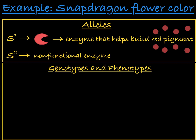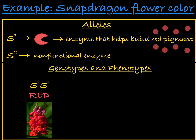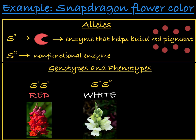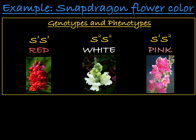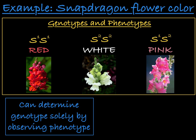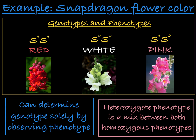When a snapdragon plant is homozygous for the S1 allele, the plant has red flowers. When a plant is homozygous for S2, the plant has white flowers. And when the plant is heterozygous, containing both S1 and S2, it will have pink flowers. As you can see, with incomplete dominance, you know the genotype of the organism solely by observing the phenotype, and the heterozygote phenotype looks like a mix between the two homozygote phenotypes.